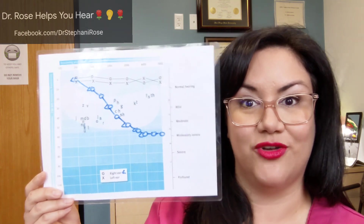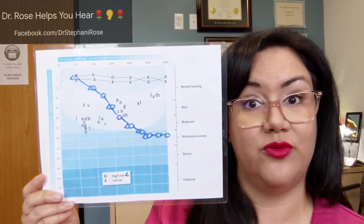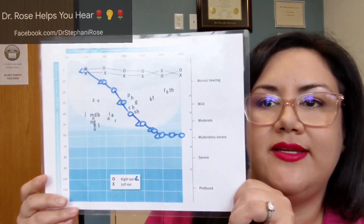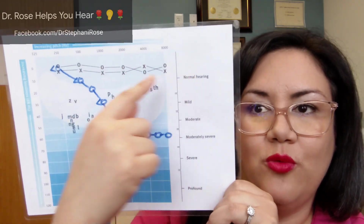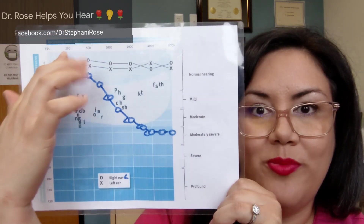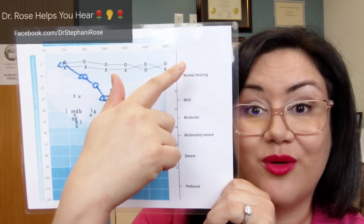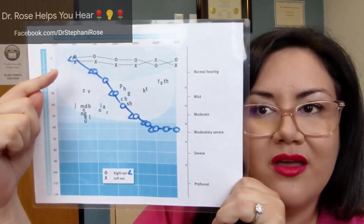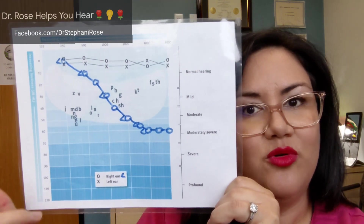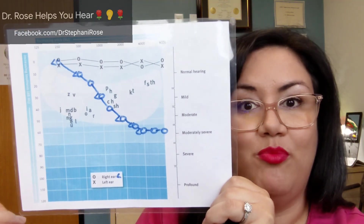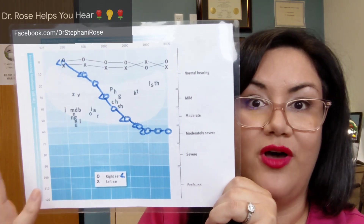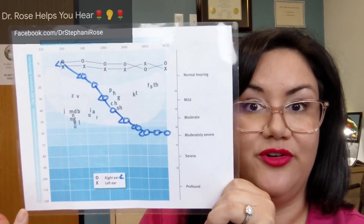Here is the audiogram with a high frequency hearing loss. You can see that this starts off in the normal range — it goes from soft to loud and then low pitch to high pitch, like a piano. The O is representative of a right ear, but we're going to assume that both ears have this symmetrical type of high frequency hearing loss.